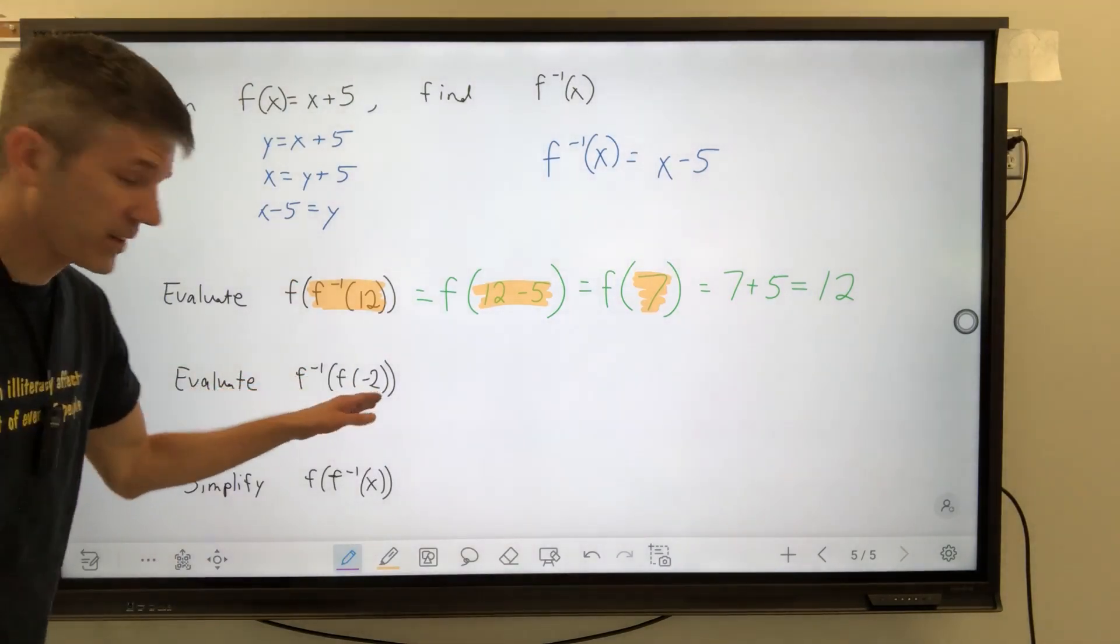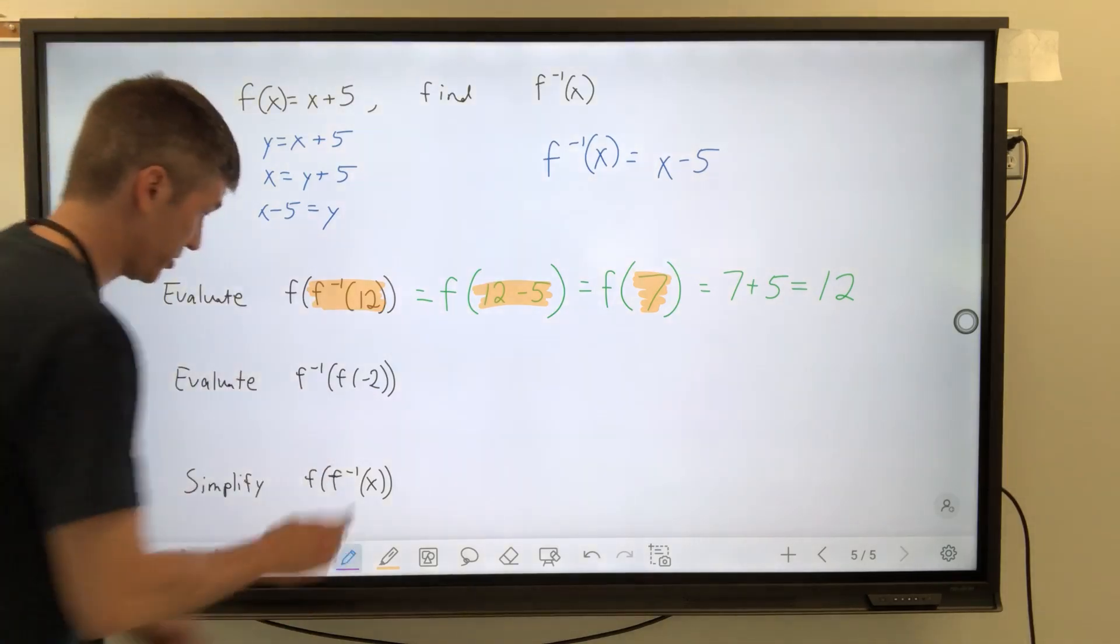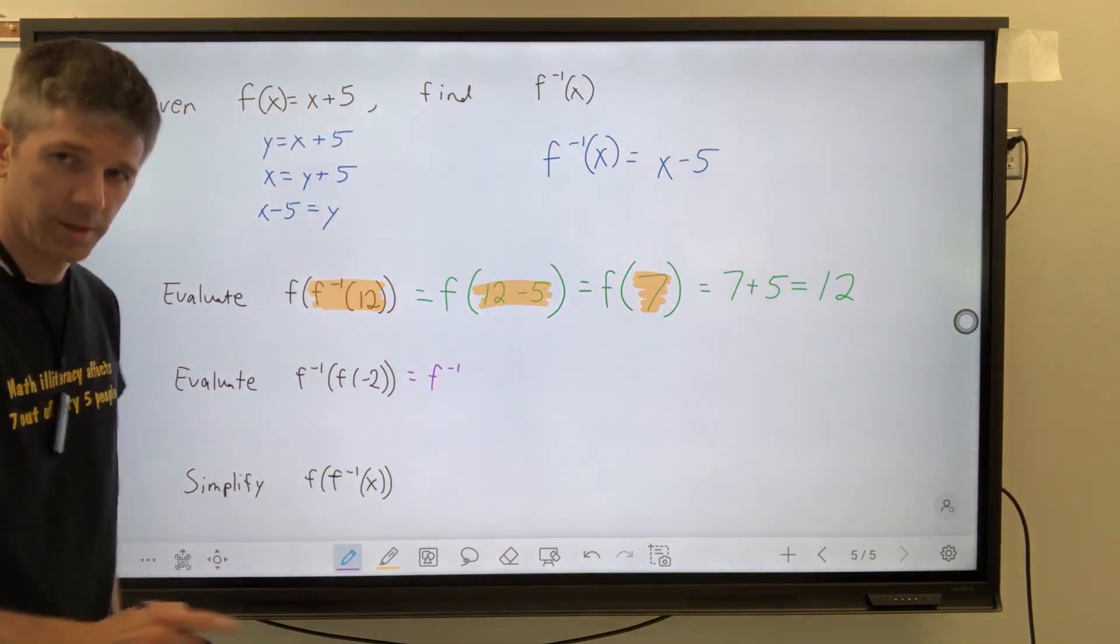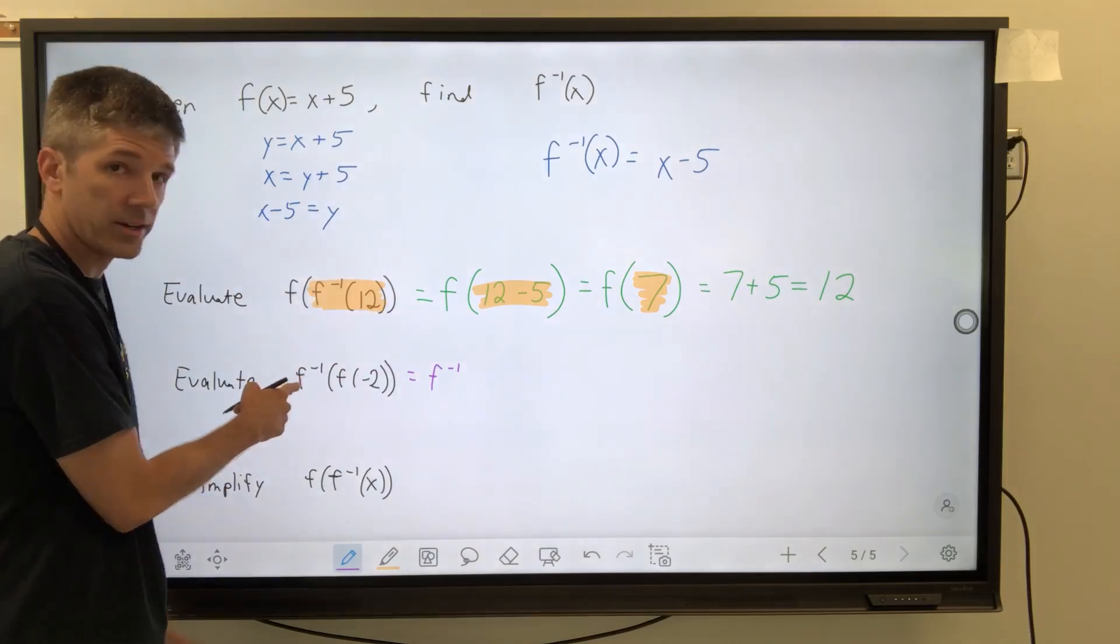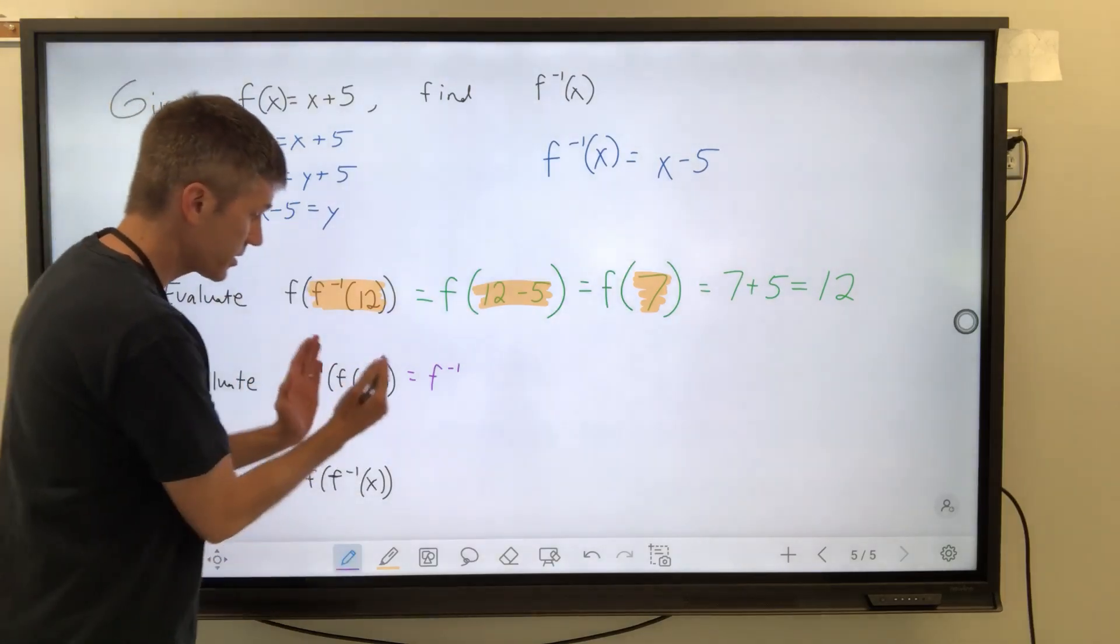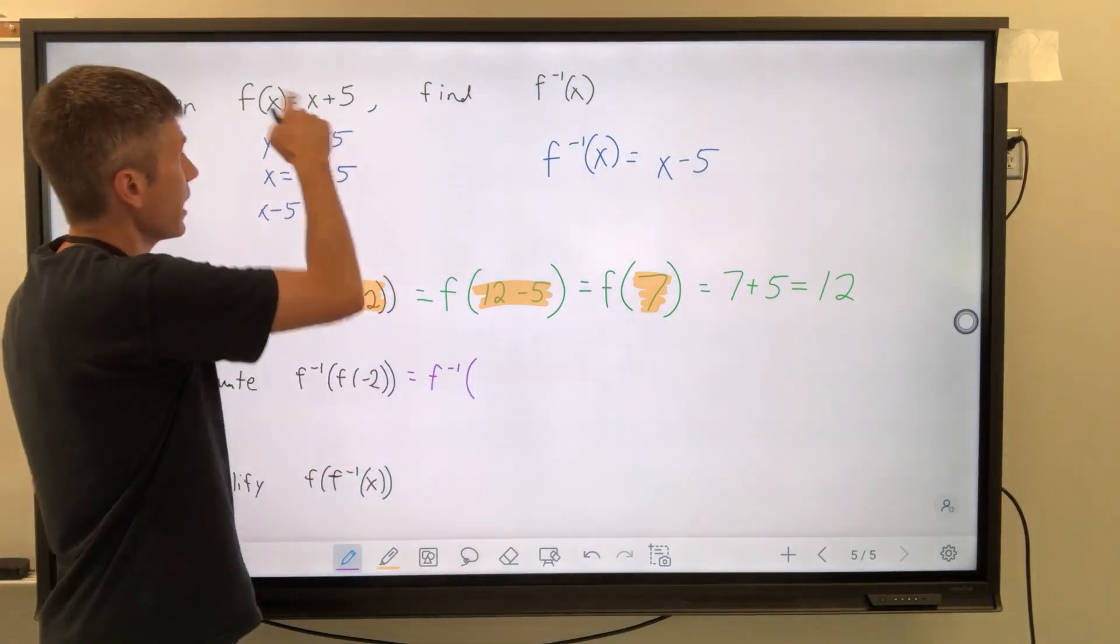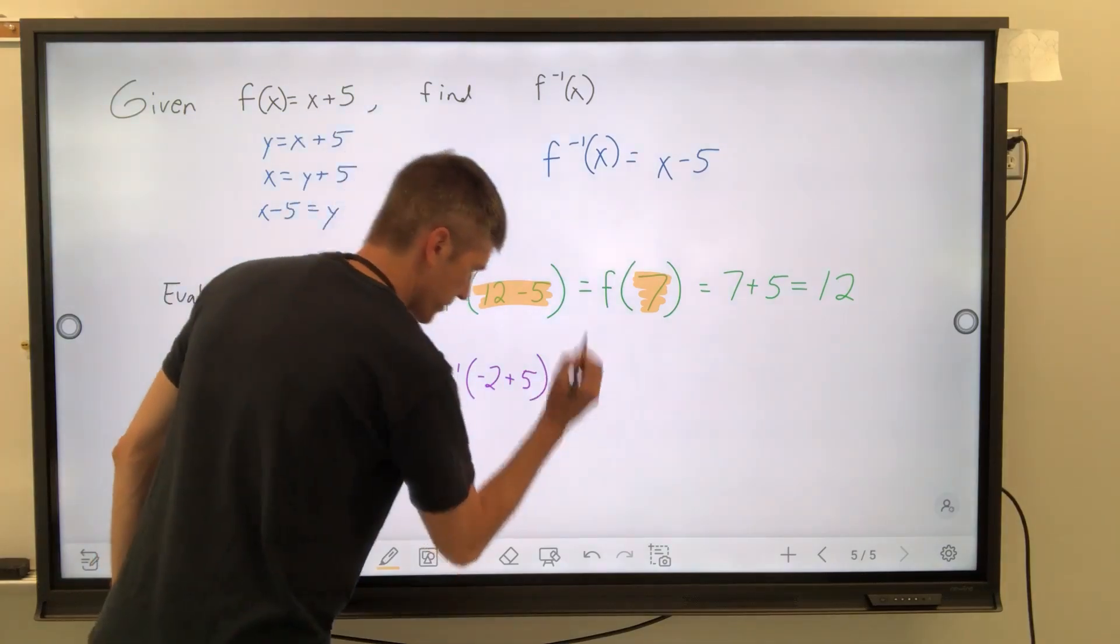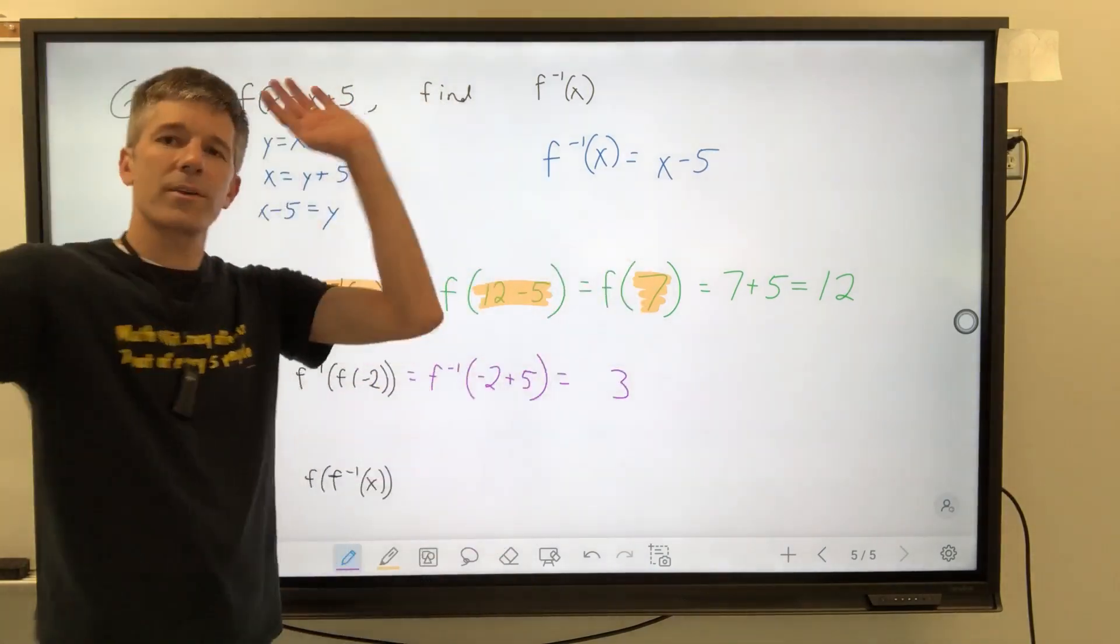Here's what just happened, though. We evaluated this to be 7, but we have not yet plugged that 7 in to the outer function of our composition. So all this that's highlighted is the same. f inverse of 12 is 12 minus 5, which is 7, but we now have to take that 7 and plug it in to the original f function that they gave us from the very beginning. So we're going to switch back to the pen. And we're going to go 7 plus 5.